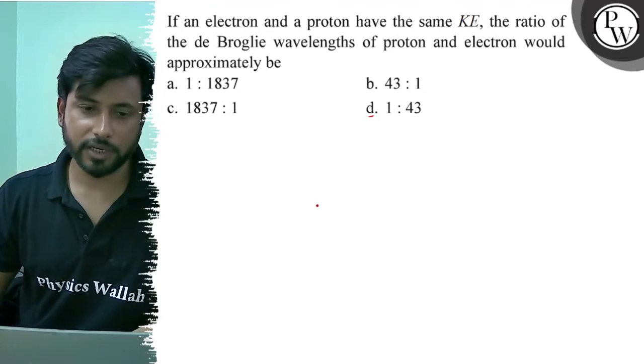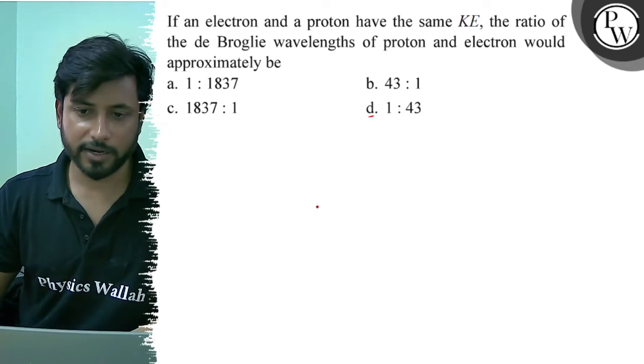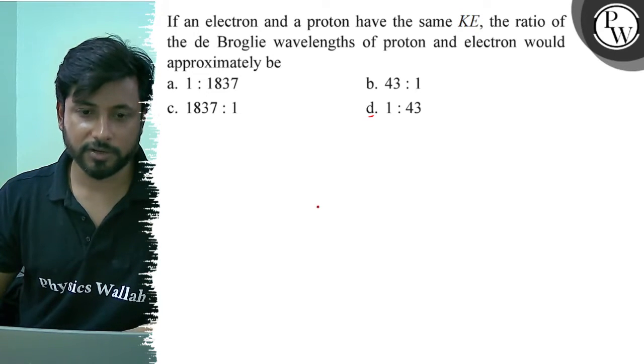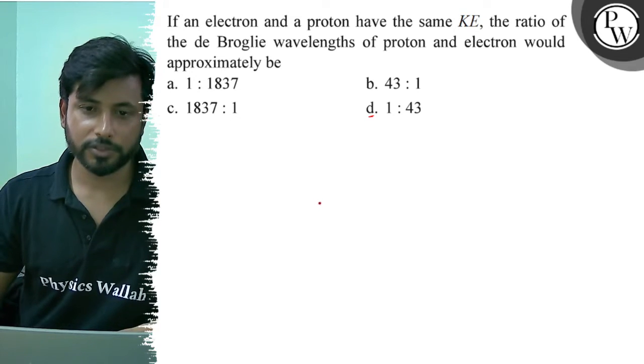Hello, let us see this question. If an electron and proton have the same kinetic energy, the ratio of the de Broglie wavelength of proton and electron would be approximately: option A, 1 by 1837; option B, 43 is to 1; option C, 1837 is to 1; option D, 1 is to 43.